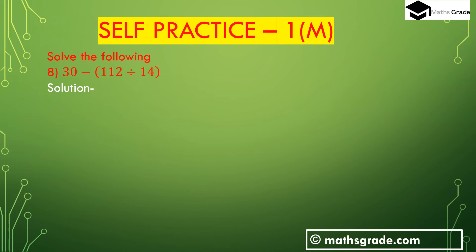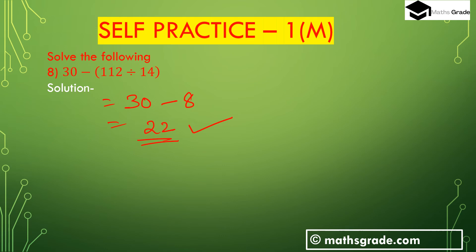Now question number 8: 30 minus (112 division of 14), where 112 division of 14 is inside the bracket. First we have to calculate the division inside the bracket: 112 divided by 14 is 8. Then 30 minus 8 is 22. So 22 is the answer. So 30 minus (112 ÷ 14) is 22.